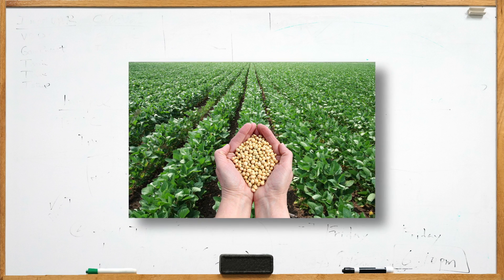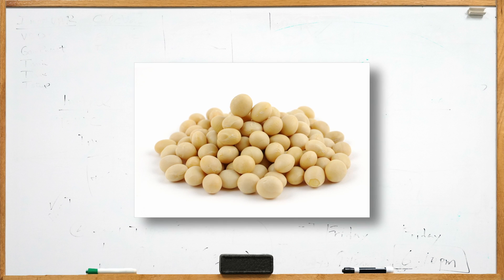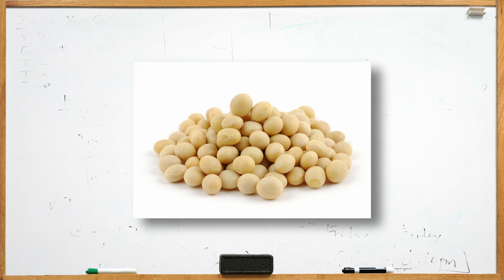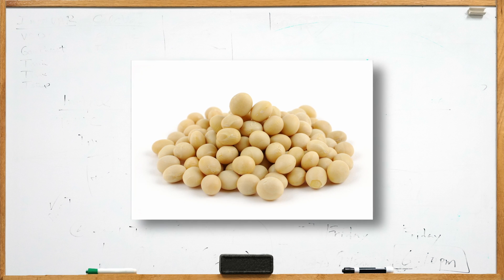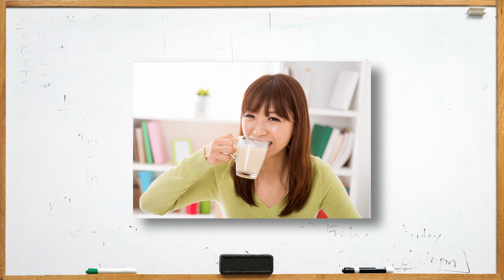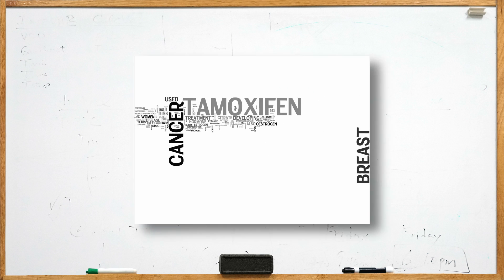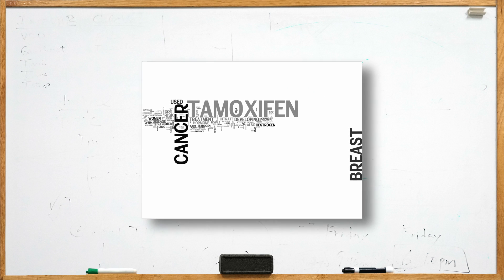Soy. Excess soy consumption increases the risk of hypothyroidism. Soy has been known to interfere with healthy endocrine function, meaning that soy can disrupt hormonal balances in the body. Studies have shown women who ate soy products experience the same hormone-altering results as if they were given tamoxifen, a drug used for breast cancer patients.